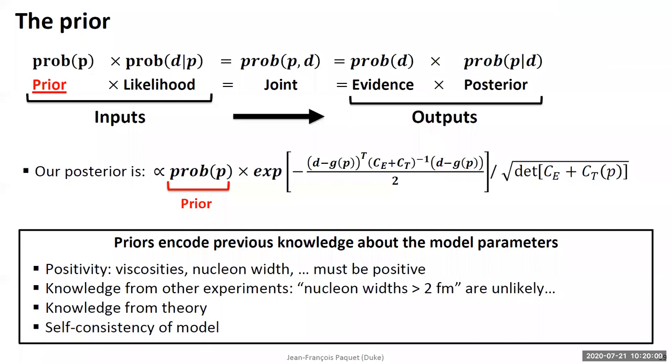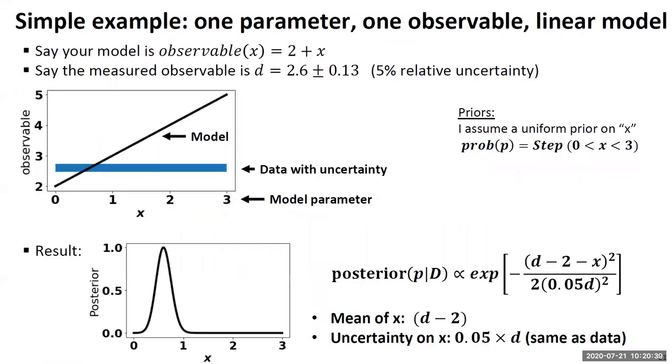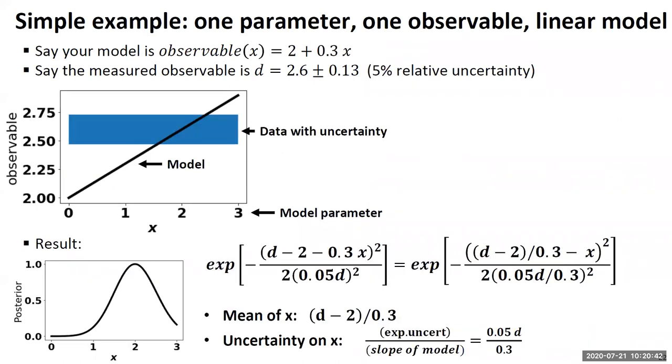One of the things that we found is important is you should check the sensitivity of your posterior probability distribution to your choice of the prior at the end. Because it might turn out that your prior was assuming too much knowledge, was too narrow, and the data didn't really provide any additional information. And what you find in the end is just the prejudice that you put in from the beginning by choosing the prior distribution.